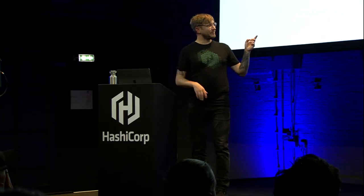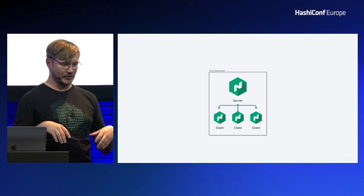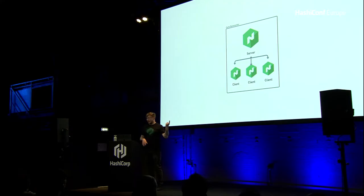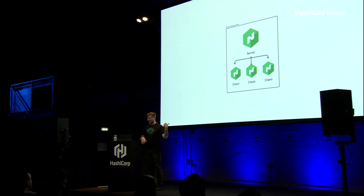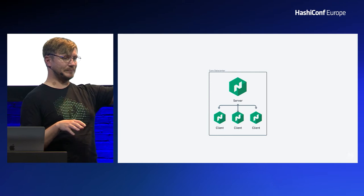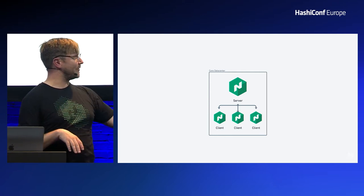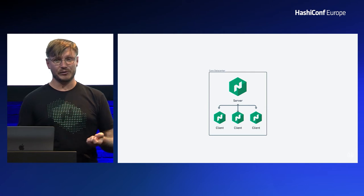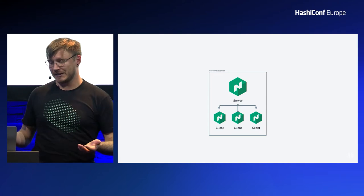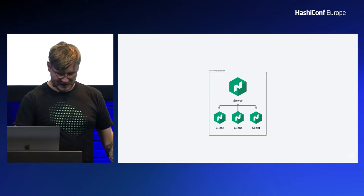This is a simple example of a core data center: a Nomad region in a physical data center with a server where state and reconciliation happen, and a number of closely connected clients. You might have more than one data center, but they will all be carbon copies — rubber-stamped. That might be for multi-region or multi-cloud, connected by a direct link or VPN solution.